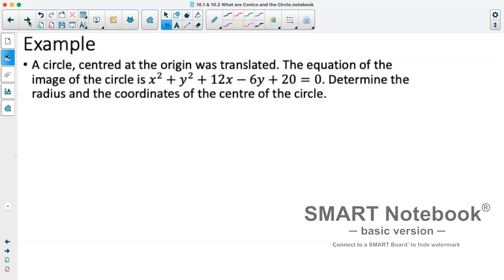So to change this into our form that helps us for graphing and figure out where the center of our circle is, we're going to do something that we did in pre-calculus 11, which is completing the square. Now we're going to do that with both our x values and our y values. So I'd start out by rearranging this, putting our x terms together. So we've got x squared plus 12x and then we'll have plus y squared minus 6y. I'll leave some space and then we've got plus 20 equals 0.